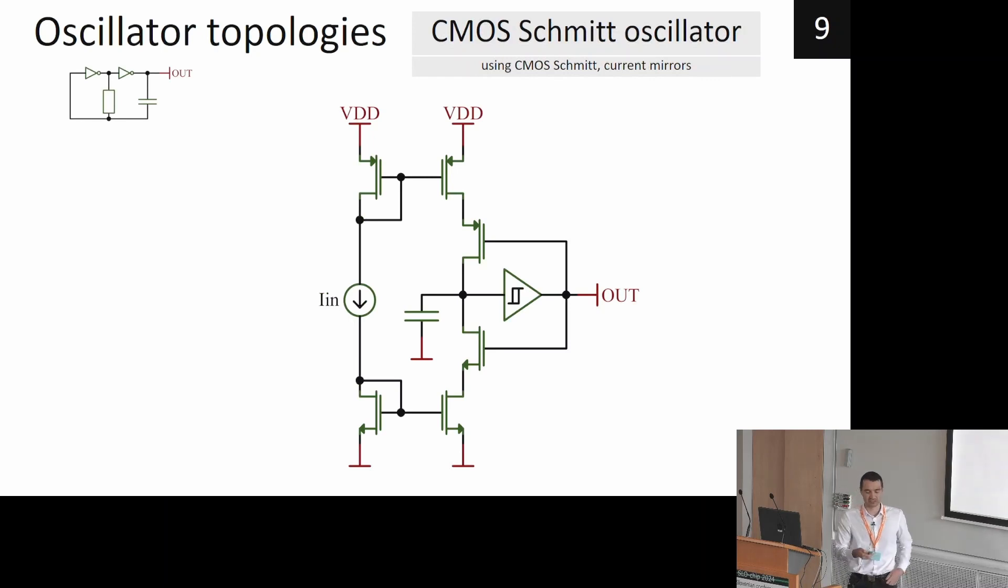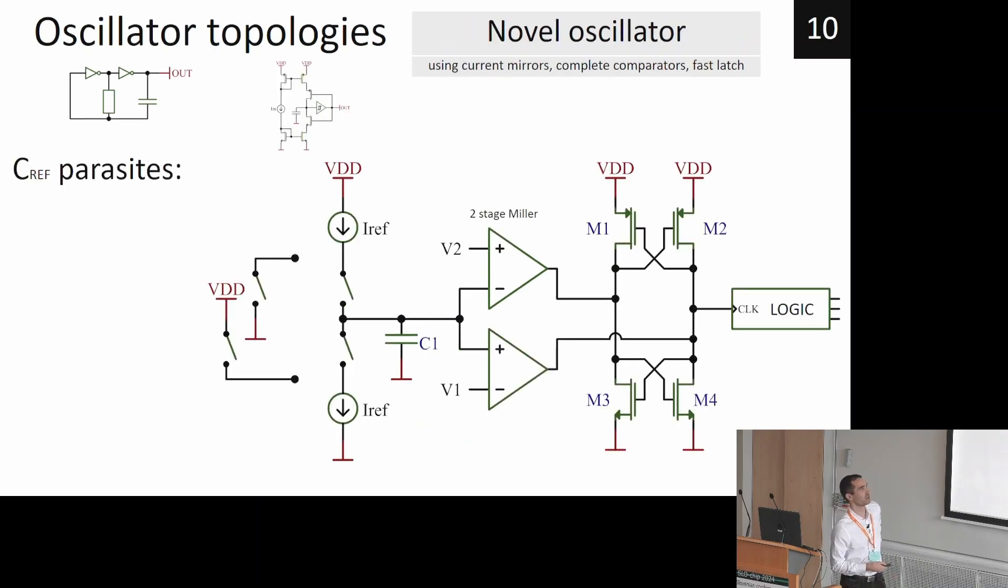and a current mirror and Schmidt trigger. We can even... but we still have a problem of threshold voltage of MOSFET transistor. So we want to also get rid of the Schmidt trigger. This we can do with